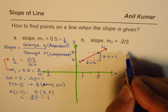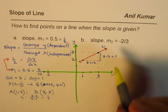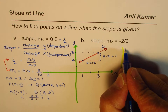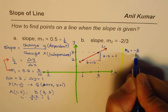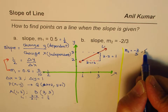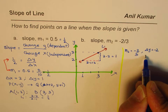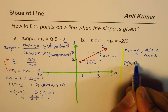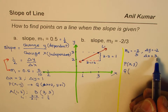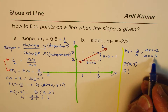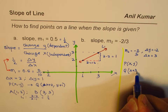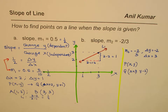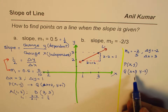As we did last time, when slope m2 is minus 2 over 3, we are saying that change in y is minus 2 and change in x is 3. If we take a point P with coordinates (x, y), then point Q should have x plus 3 for the x-value and y minus 2 for the y-value.